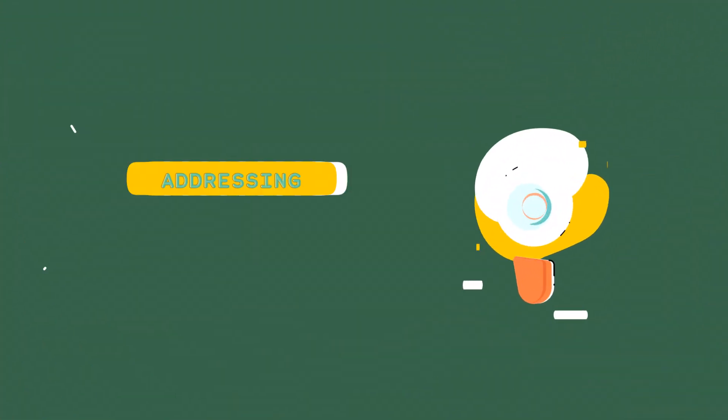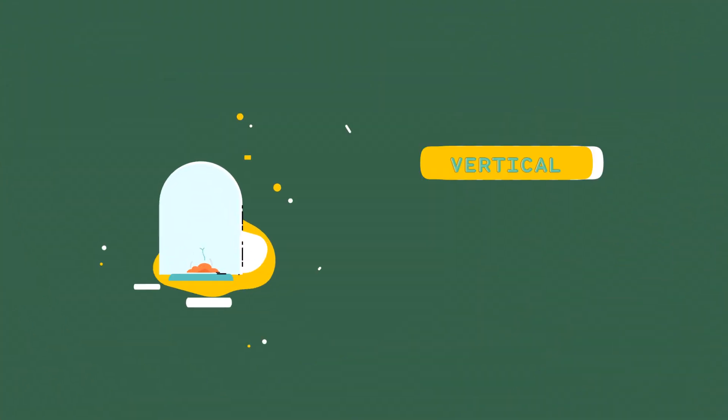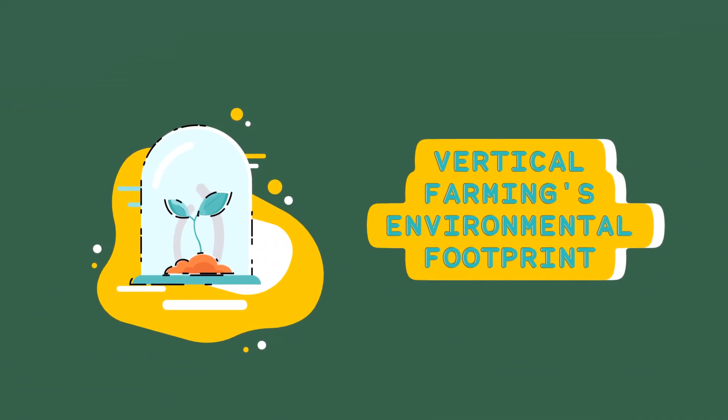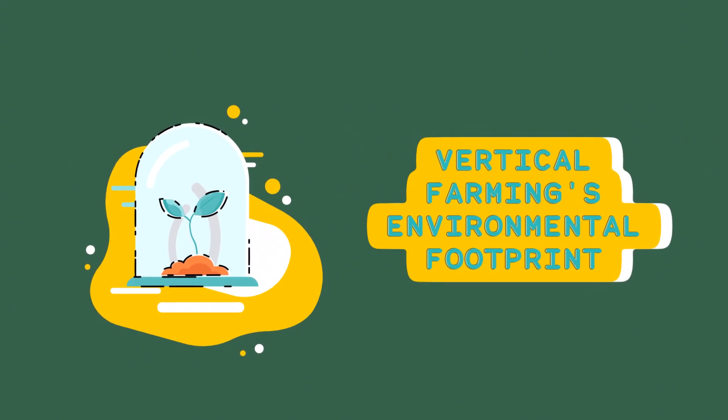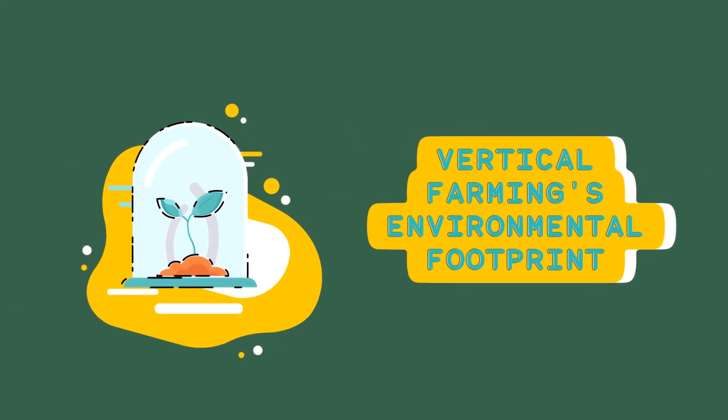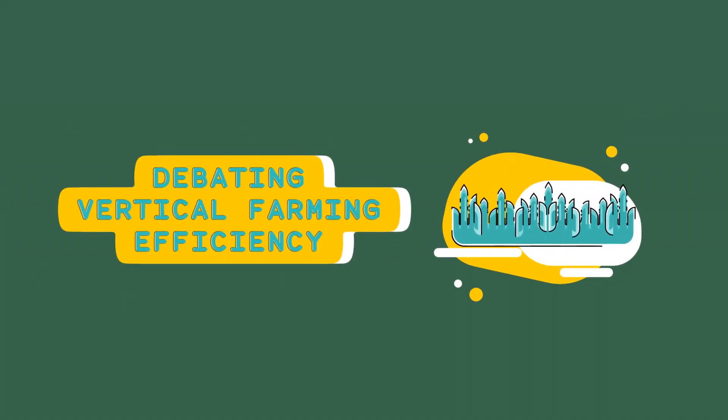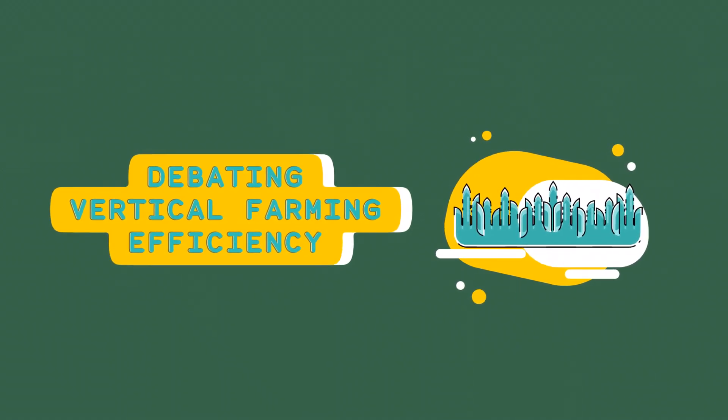Sustainability concerns. Environmental impact. While vertical farming can reduce the need for pesticides and herbicides, it may still have a significant environmental footprint due to energy consumption and waste generation. Resource efficiency. The overall resource efficiency of vertical farming compared to traditional agriculture is still a subject of debate.